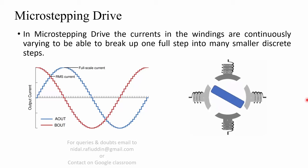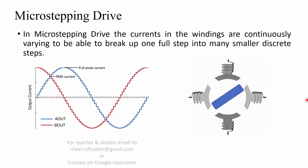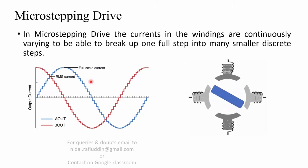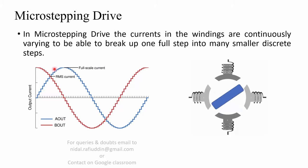In micro stepping drive, the currents in the windings are continuously varying — it breaks up one full step into many smaller discrete steps. This can be understood by the waveform given as input to the motor windings, which are given in the form of discrete steps with many levels, resembling a sinusoidal waveform.